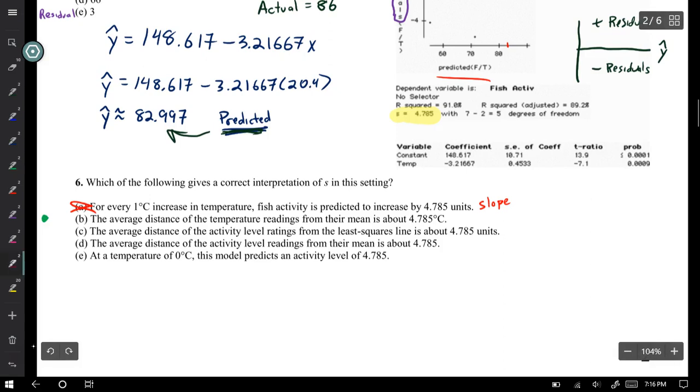I really like number five because it's multi-step, it's in-depth, and it's really crucial to understand what the problem is asking for and what you have to find to get there. Now let's look at number six. Which of the following gives a correct interpretation of S?